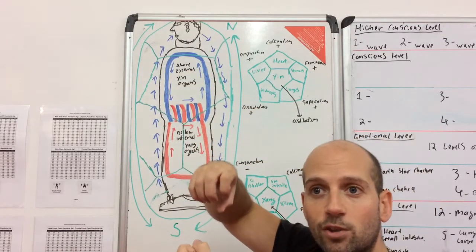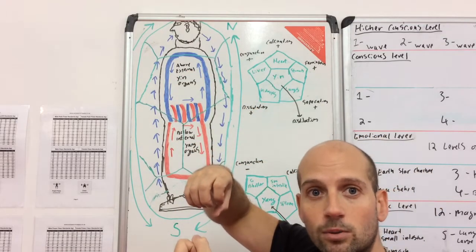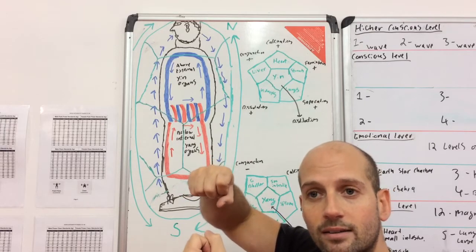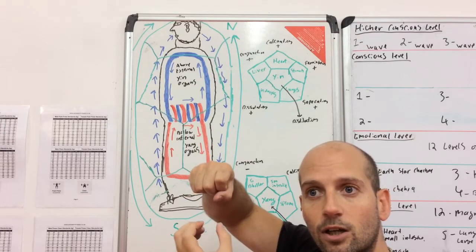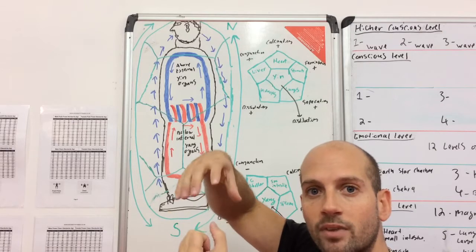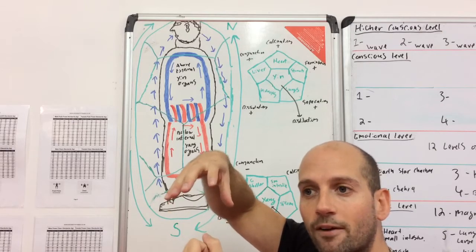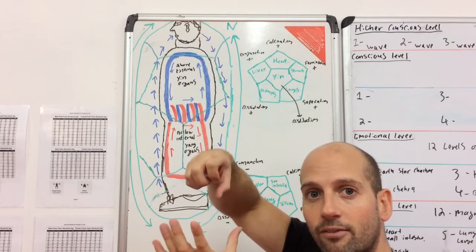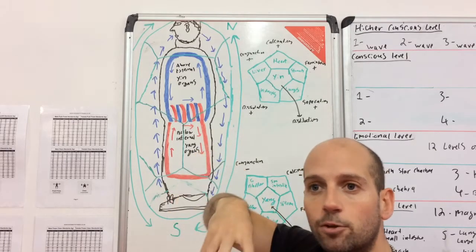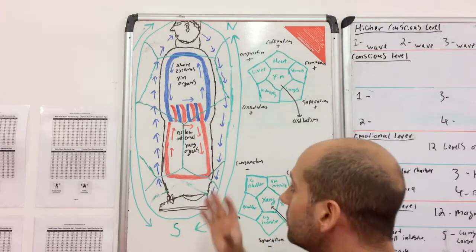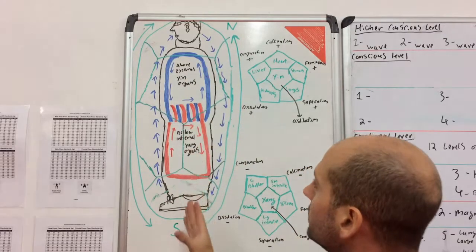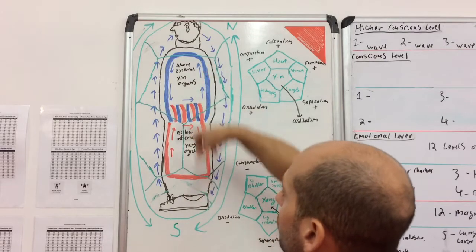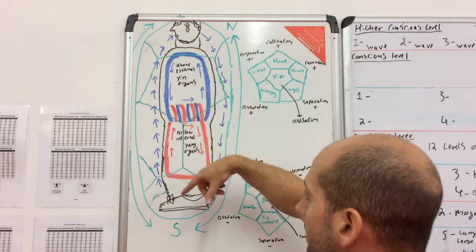As we do the opposite — as we breathe out — the upper cavity contracts and the lower cavity expands. So on the breath in we have this, on the breath out we have this. And this pumping action pumps the energy up and down in a line, straight up through the body through the energy channels.